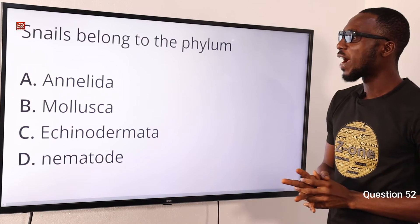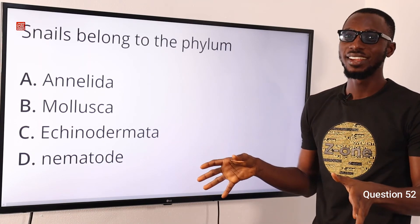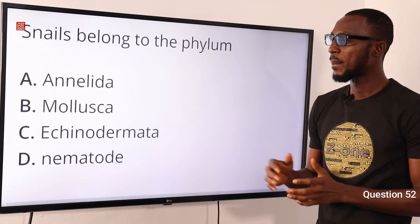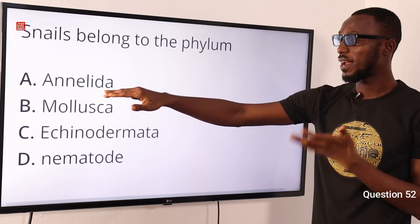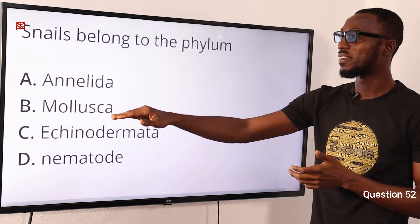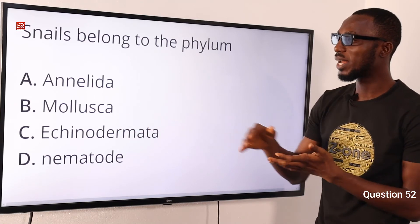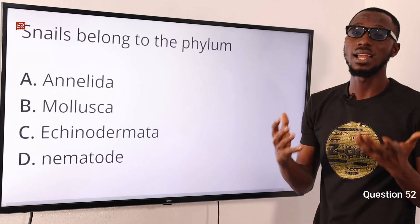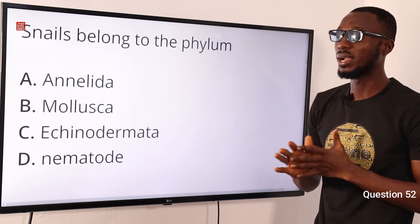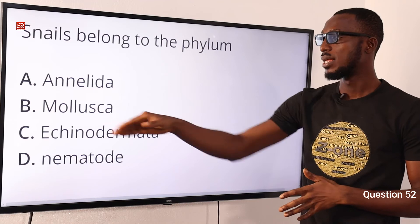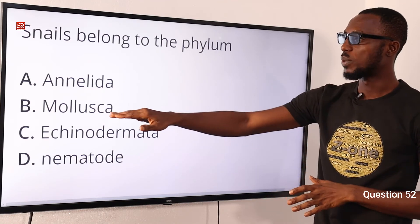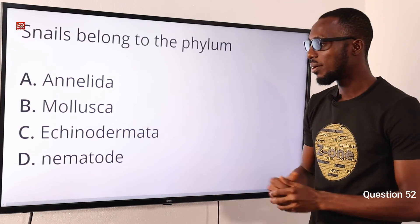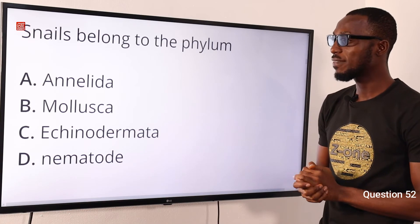Question 52. Snails belong to which phylum? In the kingdom Animalia we have vertebrates and invertebrates with several phyla. Annelida covers earthworms. Snails belong to the phylum Mollusca. Within Mollusca there are three classes: Gastropoda — where you find snails; Pelecypoda — where you find mussels; and Cephalopoda — where you find octopuses. Nematoda covers roundworms. So the correct option is option B for Mollusca.